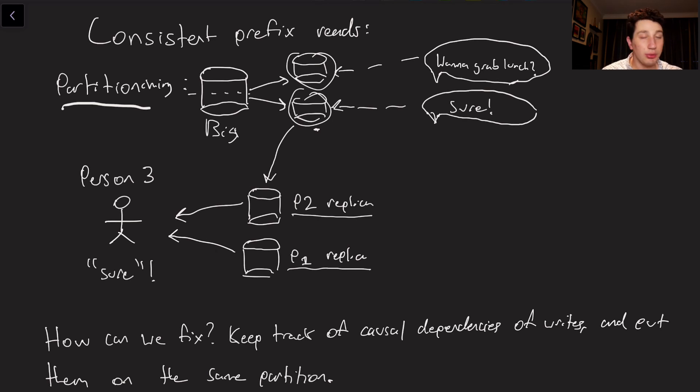And because there's no guarantees on when messages are going to be transmitted over the network, it's possible that that message sure is going to get to P2 replica before want to grab lunch is going over to P1 replica. And so if that happens, when person three, the last guy in our group chat, goes and reads our chat, he's only going to see sure. And he's going to say, oh, I wonder what that was about, I don't know. And he's never going to know that he actually could have grabbed lunch with his other two friends.